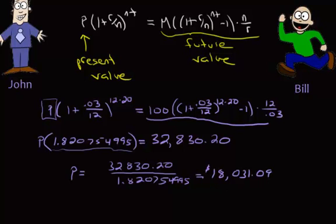So here's our present value of our annuity. This is how much money you would have to put in today and let it sit there for 20 years so that Bill would have the same amount of money as John, who's been putting away monthly for 20 years.